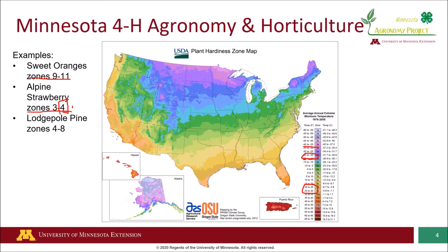We can also use this map to evaluate suitability for plants other than garden vegetables. One example is the lodgepole pine, which grows in the Rocky Mountain region of the United States in zones between 4 and 8. What if we live out here in the Appalachian area and there's a huge demand for lodgepole pines, which are used to make many houses and cabins because they have a large diameter, are really tall, and very straight — but it's too expensive to ship them from the Rocky Mountains to Appalachia?